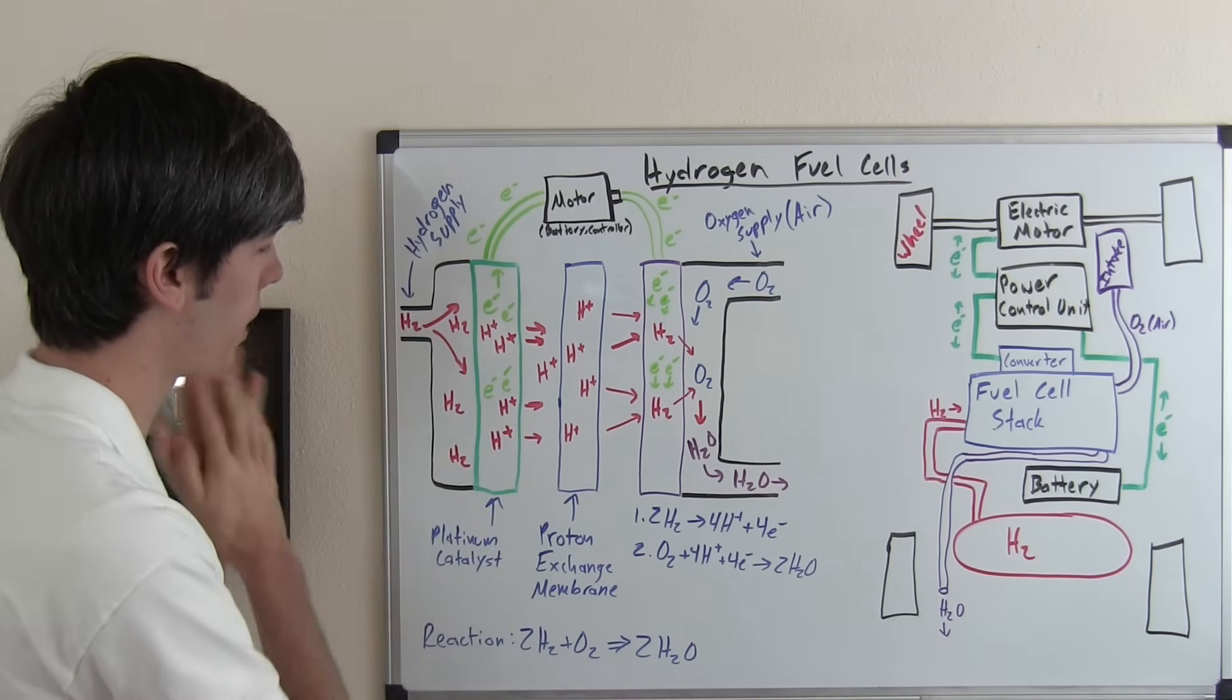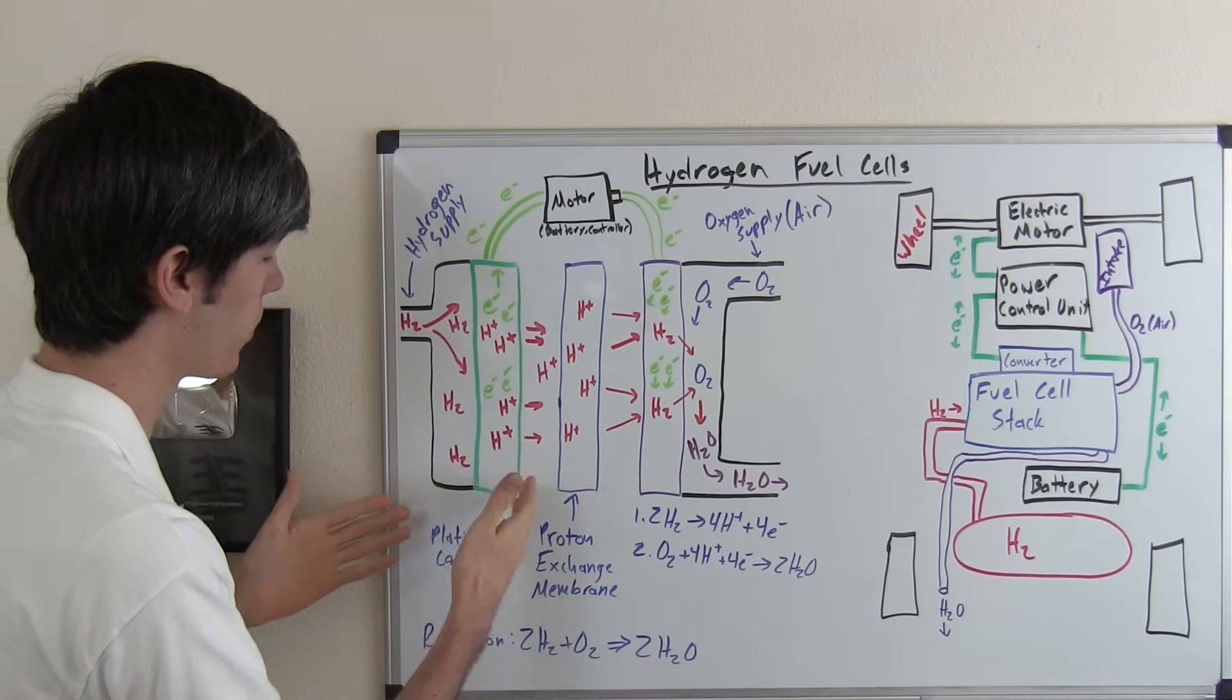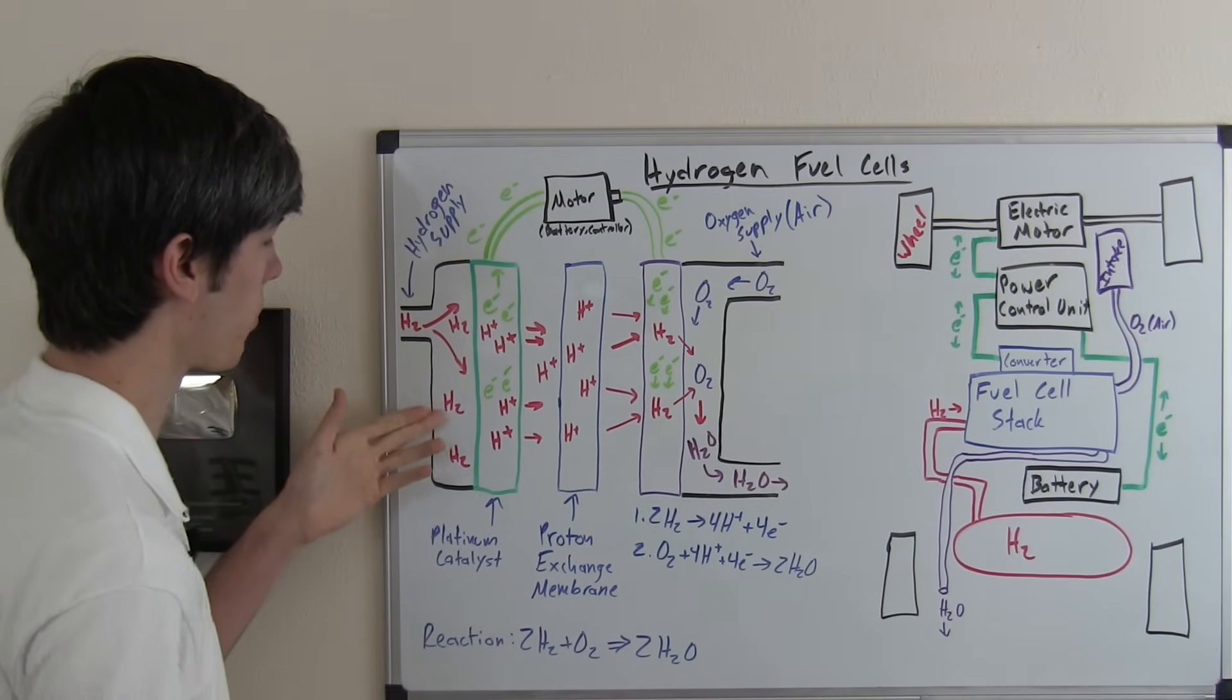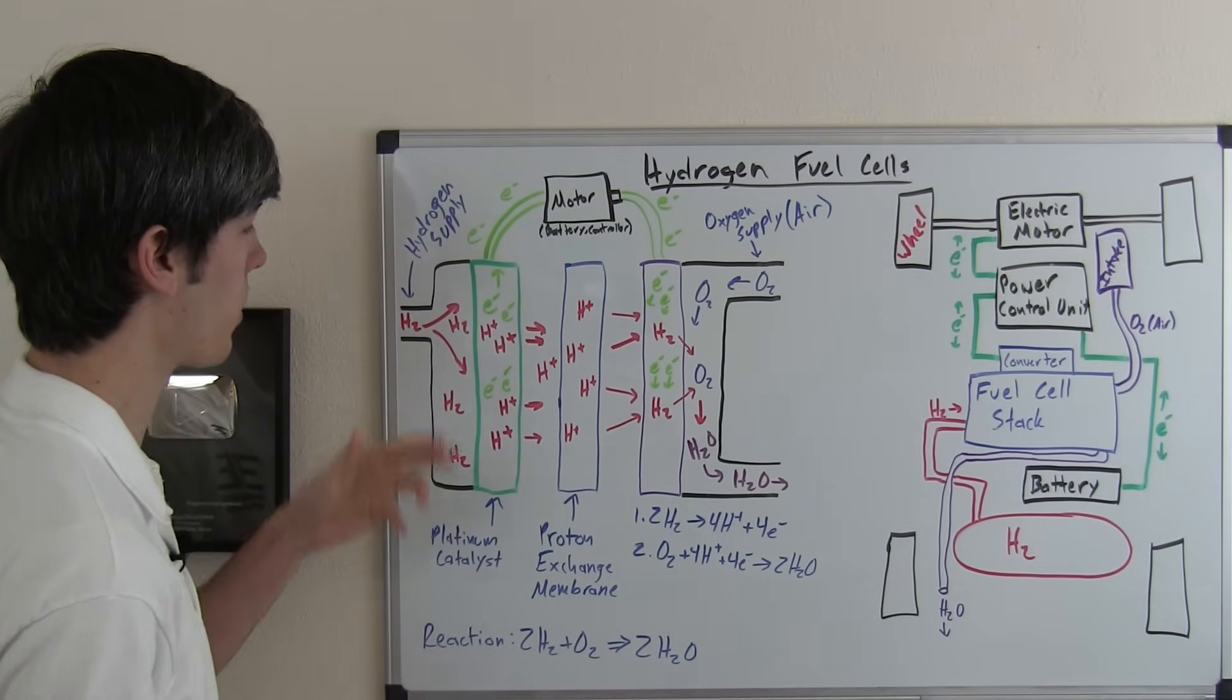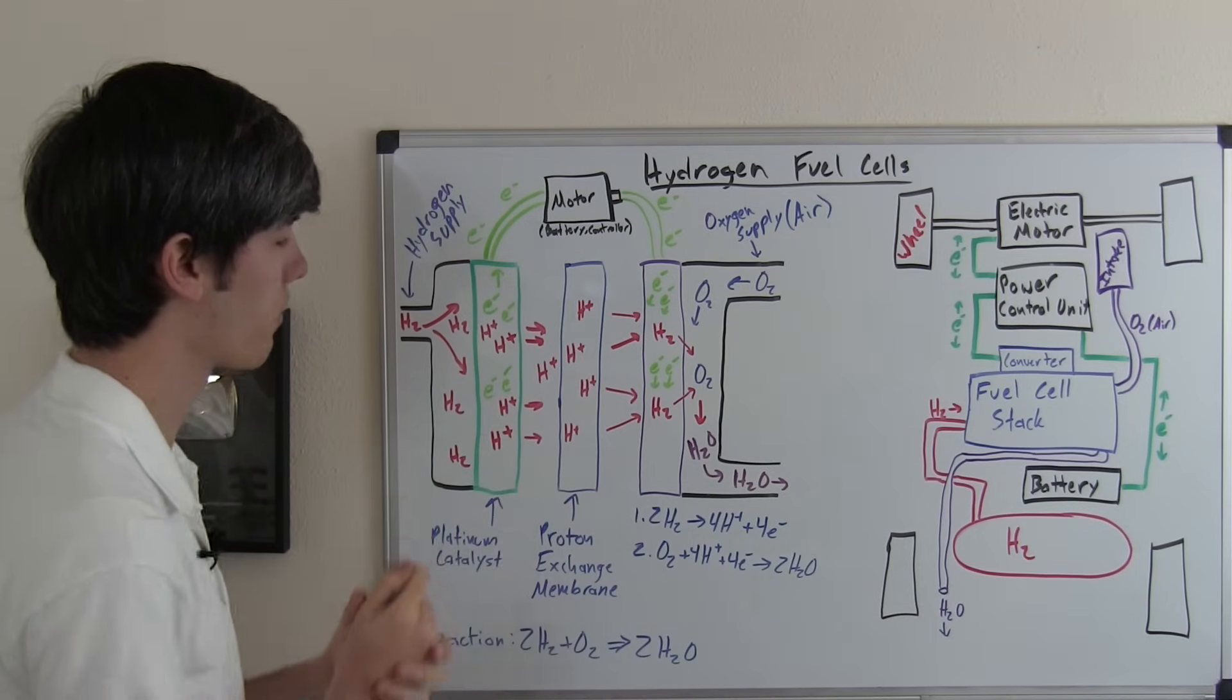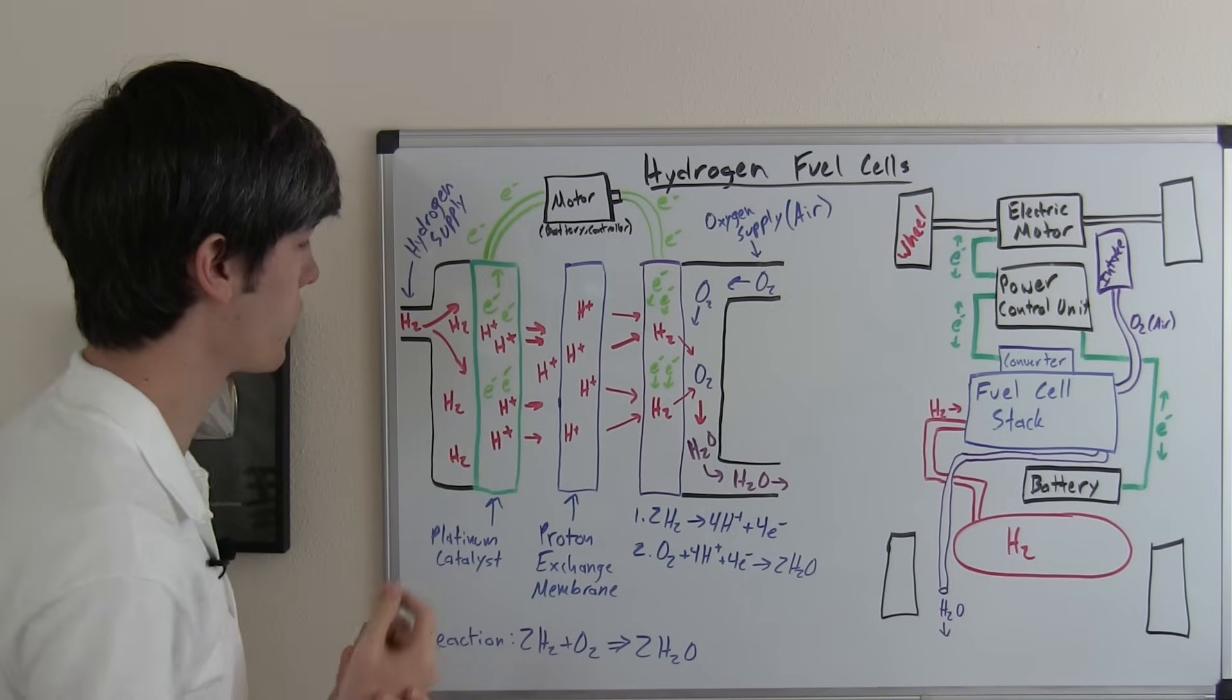So this hydrogen, the first thing it passes through, it passes this platinum catalyst and what this platinum catalyst does is it separates the hydrogen from the electrons. So the electrons are split off and now we have two positively charged hydrogen atoms.